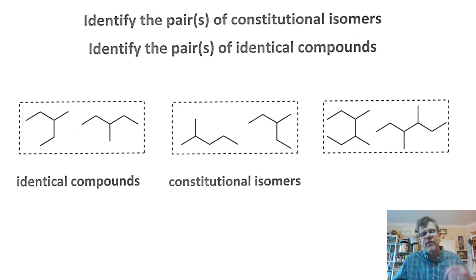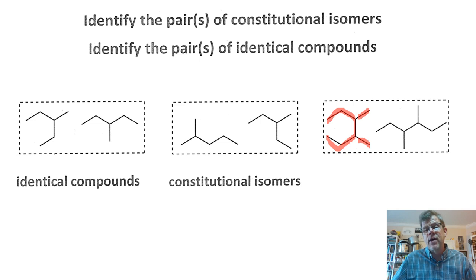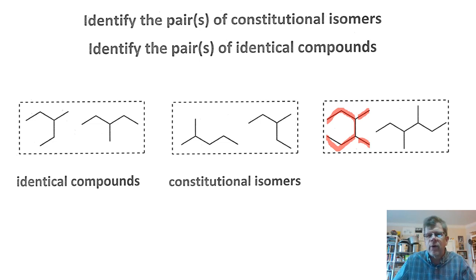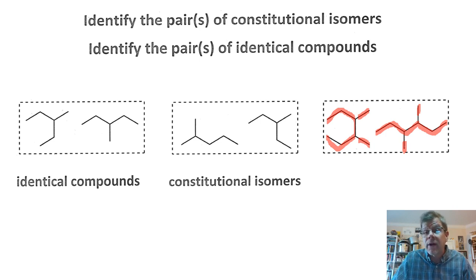We have to approach this in a standard fashion. For the third pair, the longest continuous carbon chain is six carbons with two one-carbon branches at the third and fourth carbons in. Doing the same for the other structure — the same number of carbons in the longest chain, with two one-carbon branches again at the third and fourth carbons in. Identical connectivity means these are identical compounds.